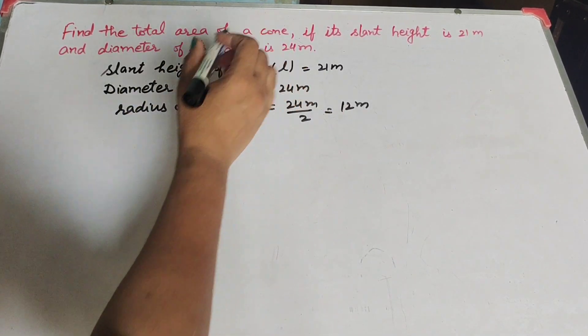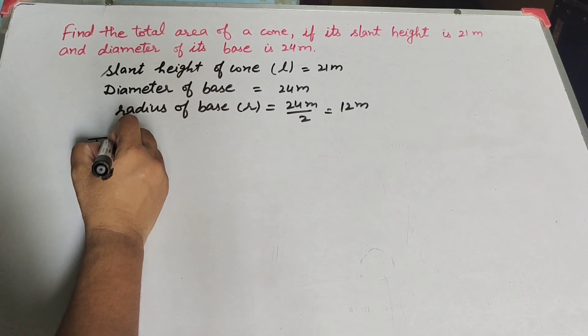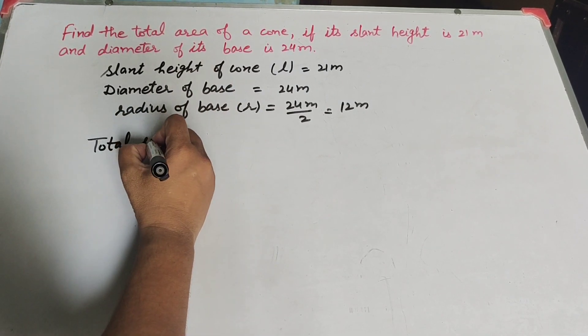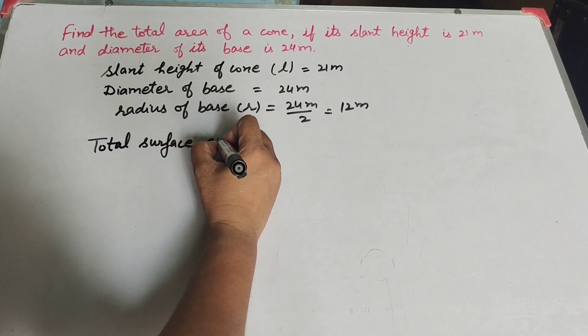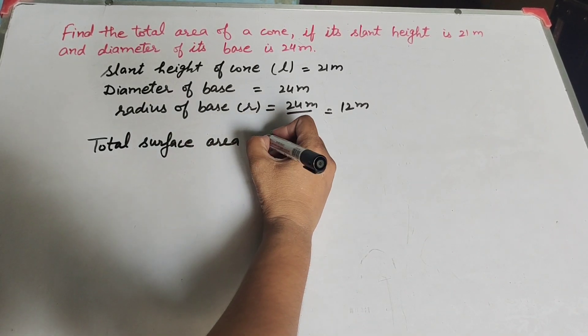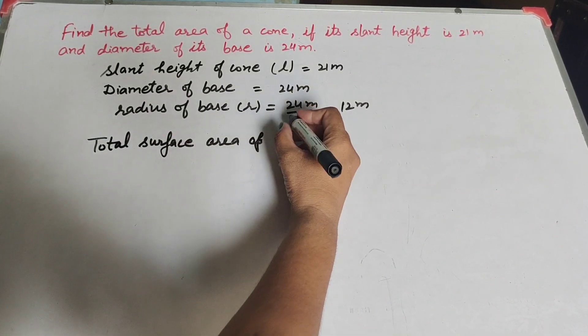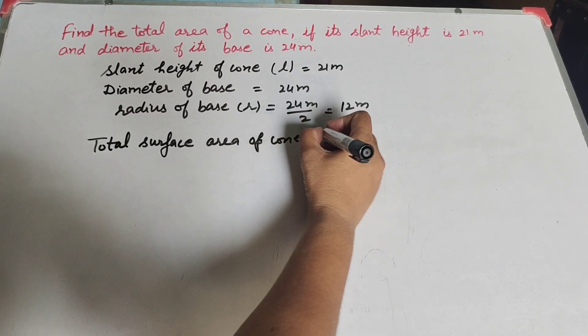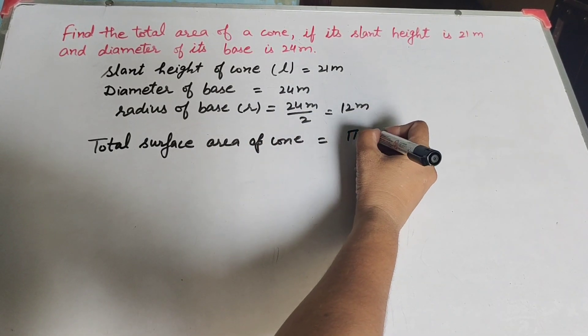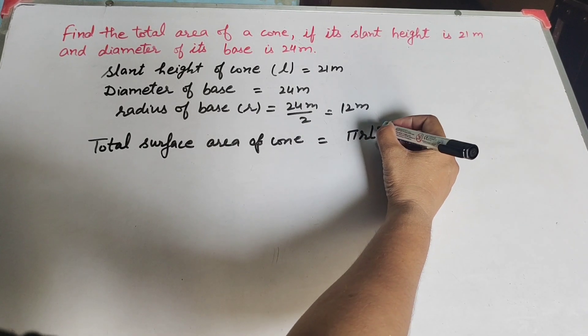Now we find total area of the cone, total surface area of cone. We know the formula to find total surface area of cone: it is πr into L plus R.